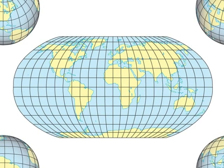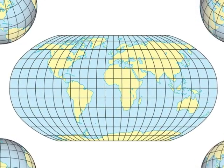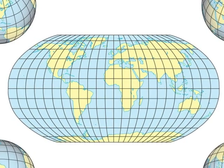Areas look larger than they really are in high latitudes, near the poles, and smaller than they really are in the low latitudes, near the equator.